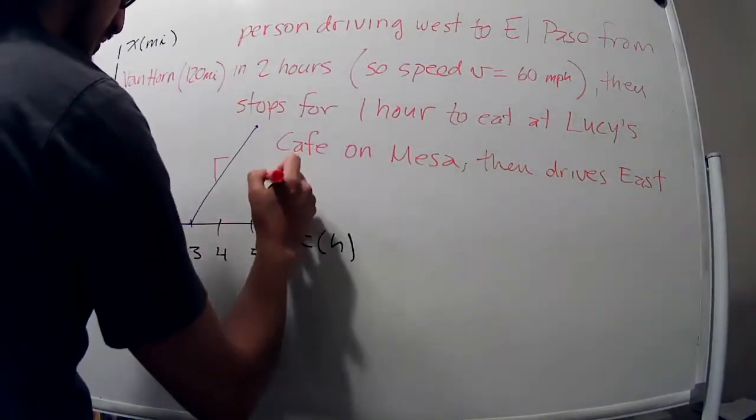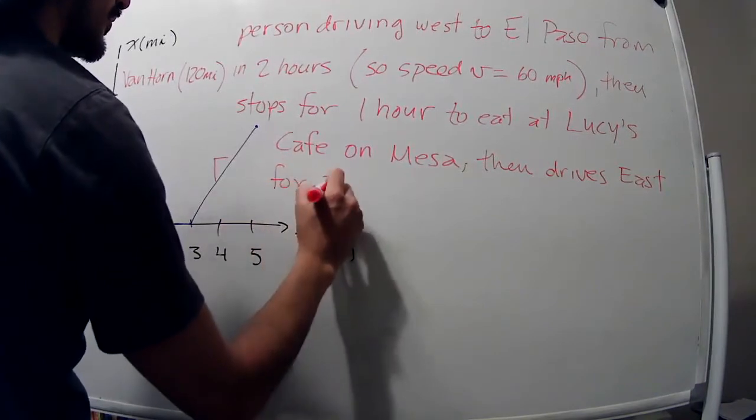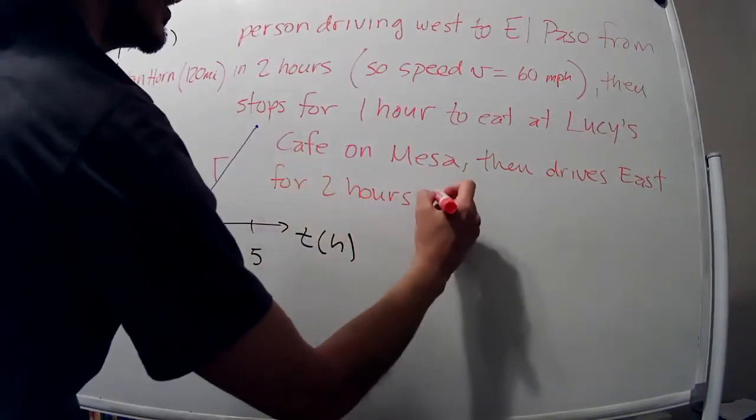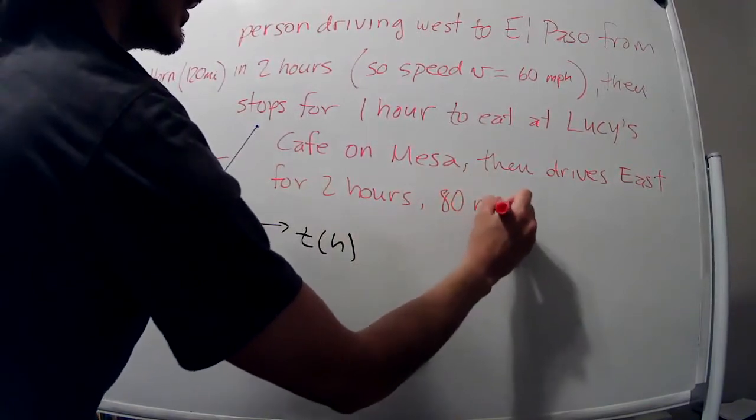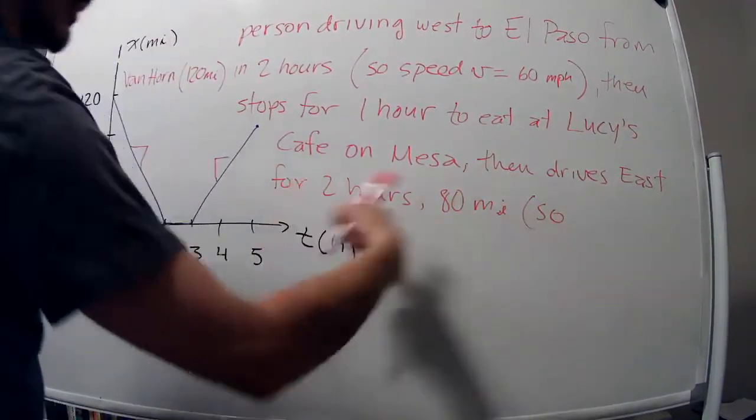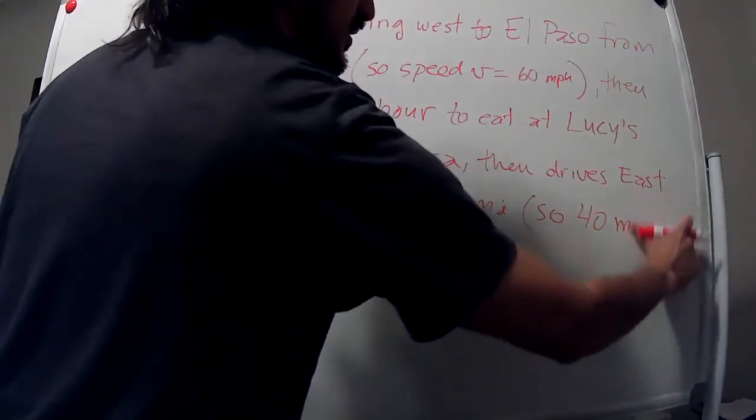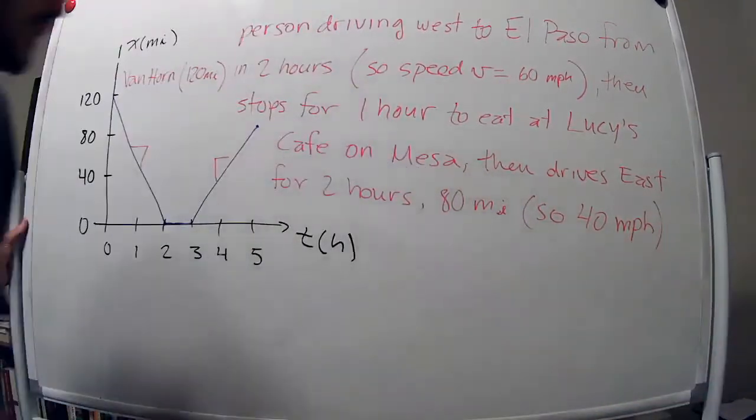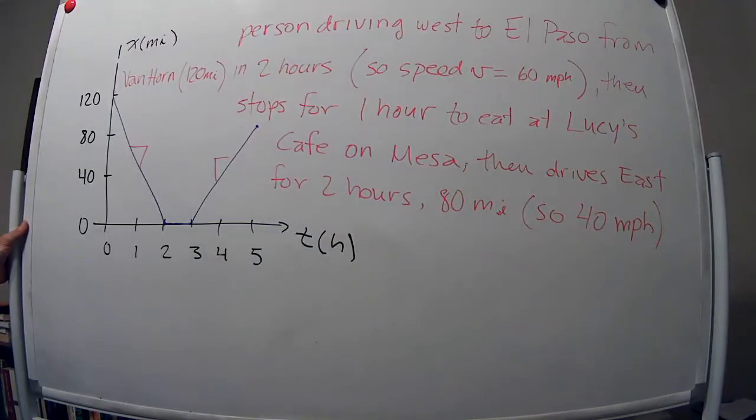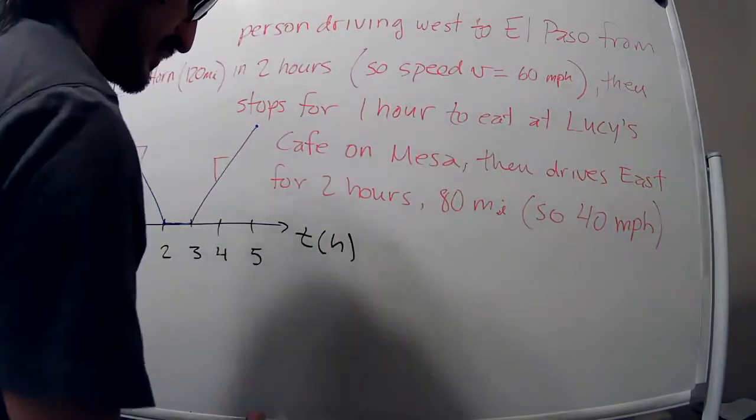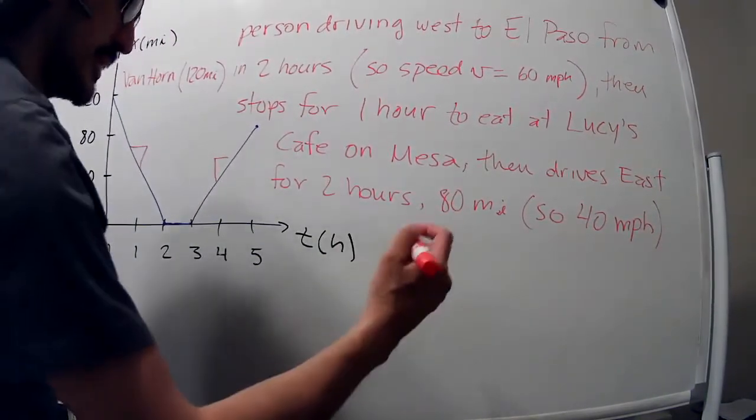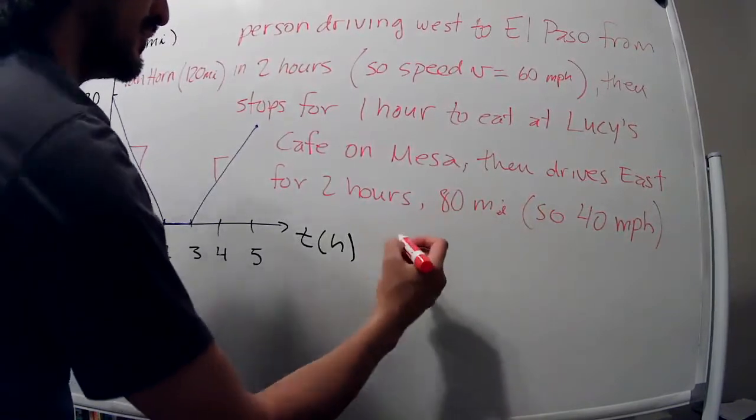Then drives east for two hours, so 40 miles per hour. And I don't know what's 80 miles from El Paso. Maybe like, I don't know, Sierra Blanca or something. I don't think Horizon is that far away, but let's say that stops.